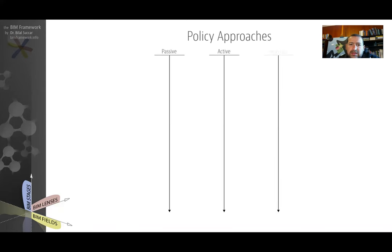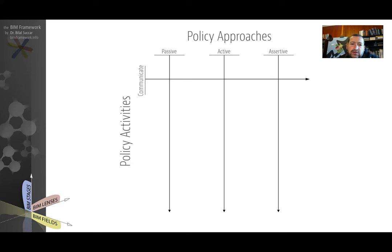One is called the passive approach, another is called the active approach, and the third is the more assertive approach. These approaches cover different types of policy activities for facilitating diffusion of BIM across a market. The three policy activities are: first, communication — to communicate; second, engagement with stakeholders; and third, monitoring of stakeholder behavior.